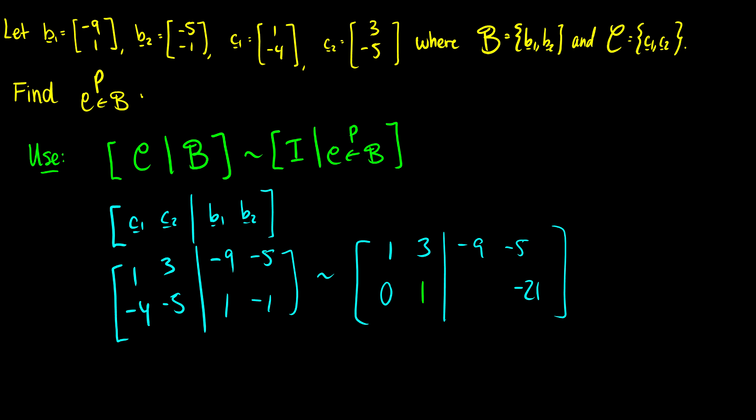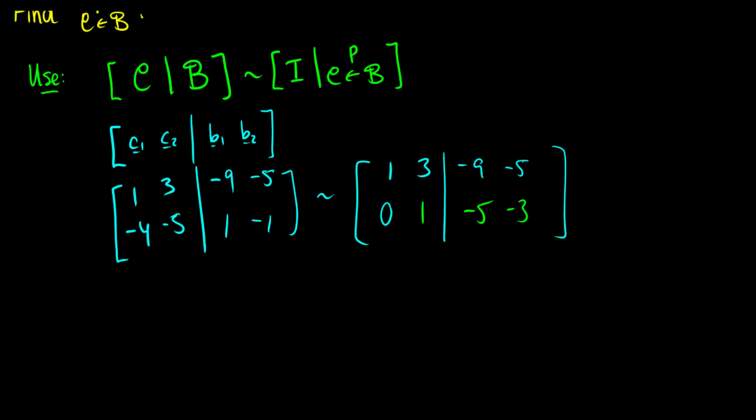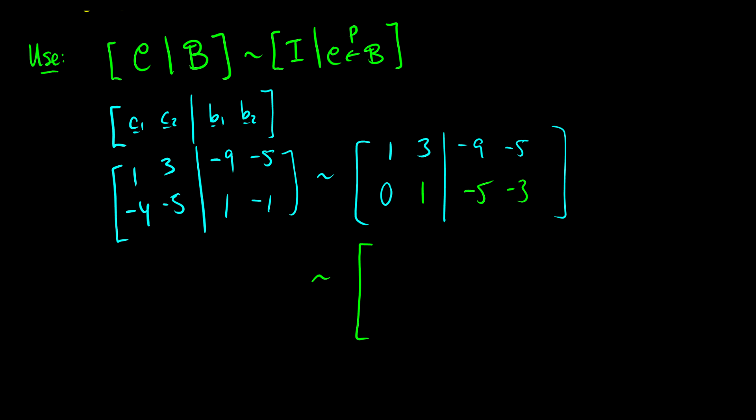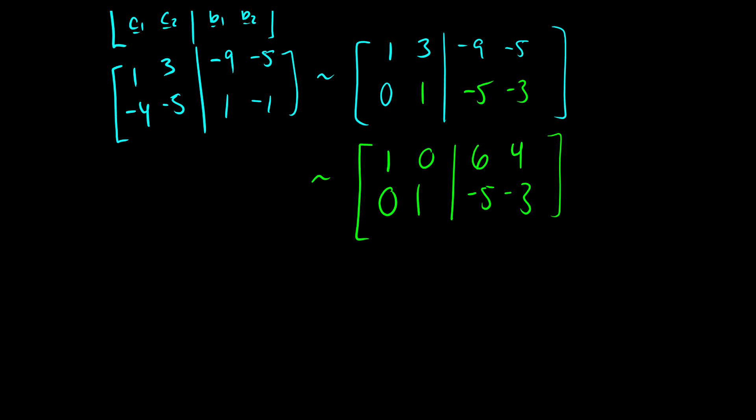So we're going to be left with 1, negative 5, and negative 3. And now what we can do is we can take the first row and subtract 3 of the second. So we're going to be left with 1, 0. This should be 6 and 4. Then we'll be left with 0, 1, negative 5, negative 3.